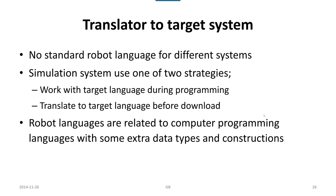Simulation systems use one of two strategies. Either work with target language during programming, meaning the target programming language of the robot system we are aiming at to actually run the program. Or translate to the target language before downloading, meaning that we work in a dedicated programming language for the simulation system and then that is translated to the target system.